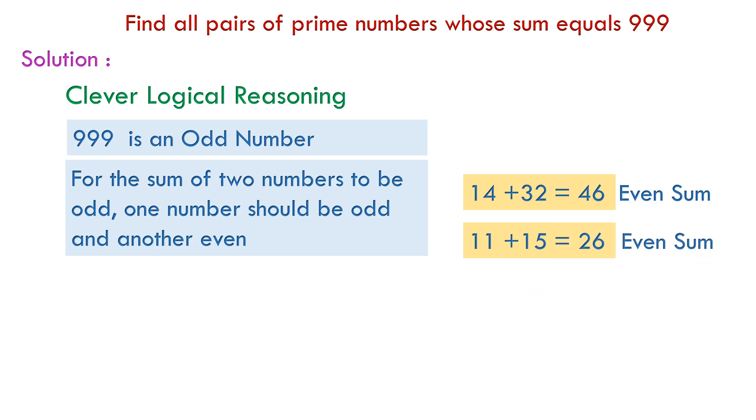But the sum of one odd number, let's say 15, and another even number, let's say 14, gives us 29, an odd sum. So there should be one odd number and one even number.